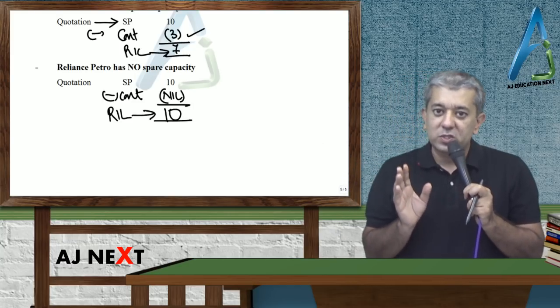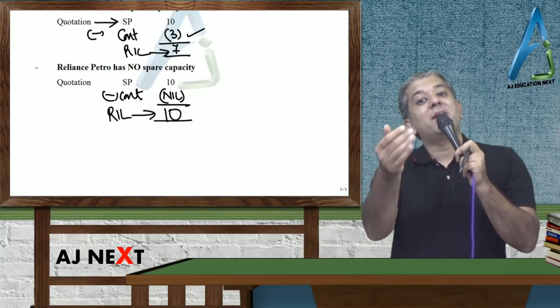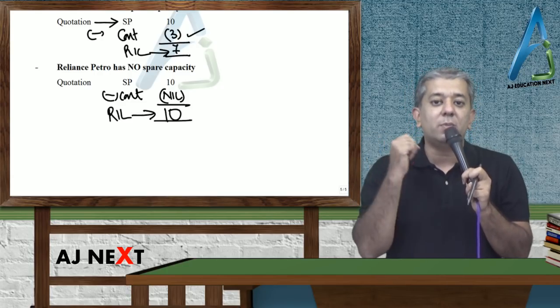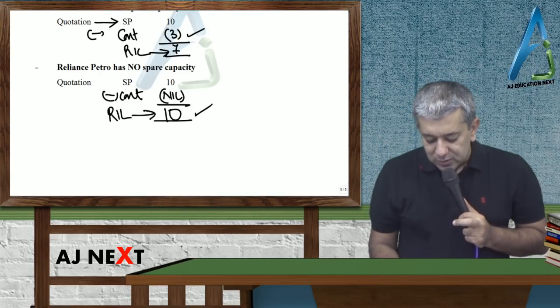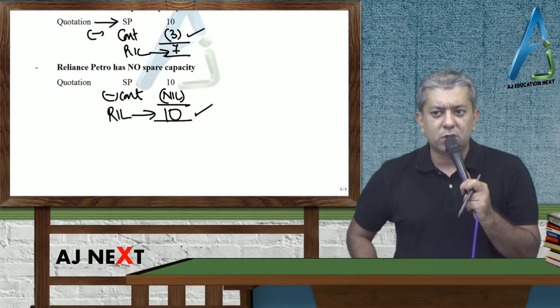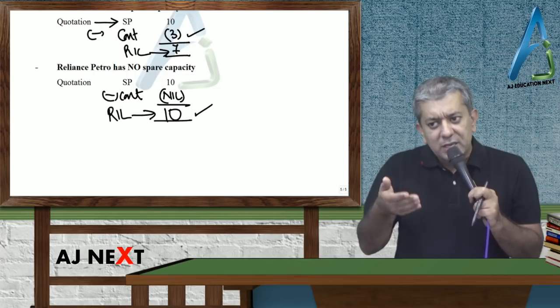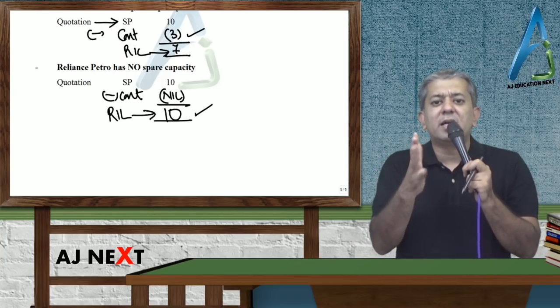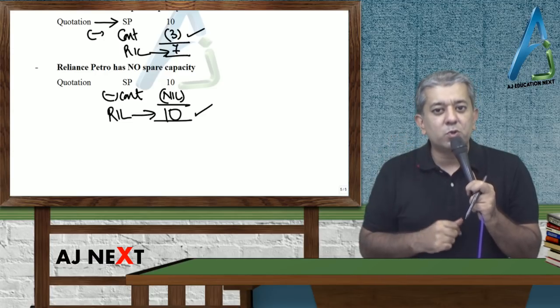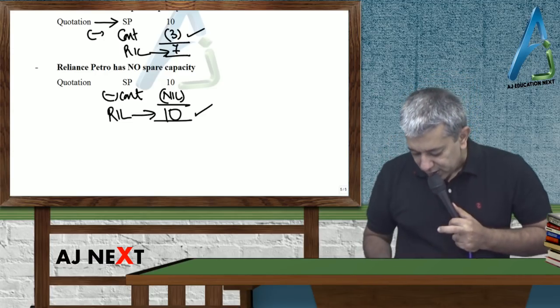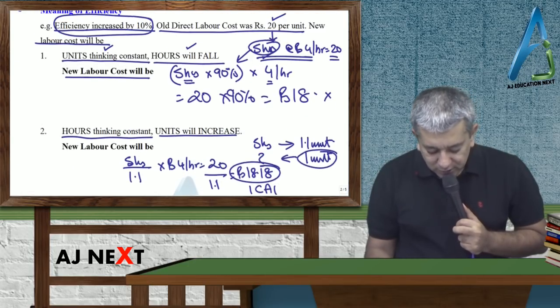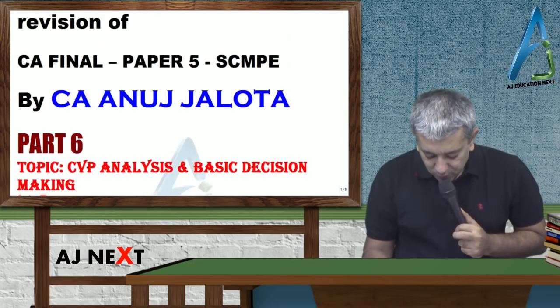Toh agar aapke paas spare capacity tha, toh aap extra kama raha hai. Toh aapka joh cost hai, woh kam ho raha hai, because of the contribution that you want. Lekin agar suppose aapko market se lose kerke yeh wala chiz accept karne ki zoruat hai, toh aap, yahaan, aapka koi subsidiary company, transaction ki wajah se, kuch kamayega hai nahi. Kyonki agar tumse kama raha hai, market se lose bhi toh kar raha na yaar. Yeh ho gaya, tumhara finally, chapter number two tha, uska ending.